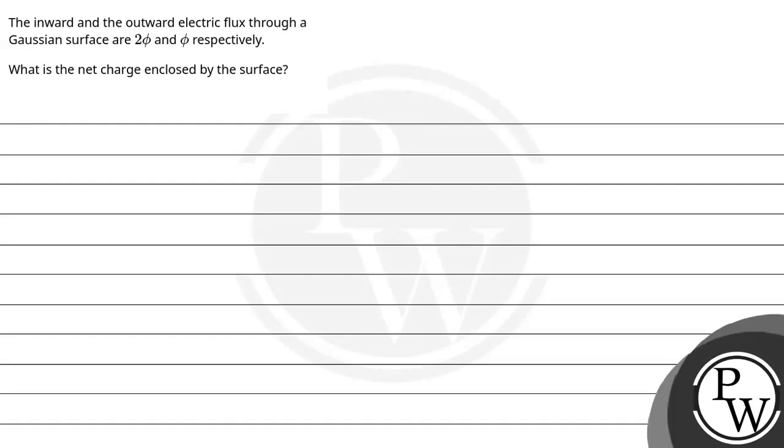Hello, let's read this question. The question says the inward and outward electric flux through a Gaussian surface is 2φ and φ respectively. What is the net charge enclosed by the surface?